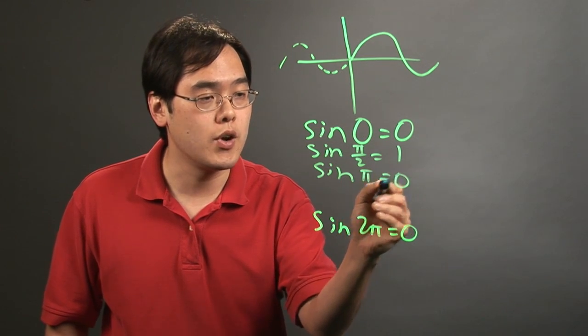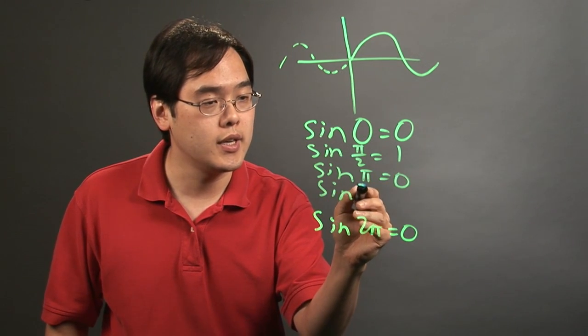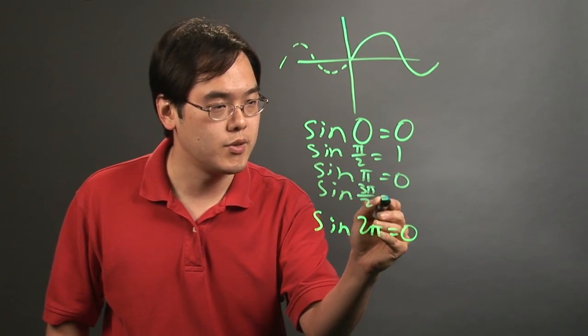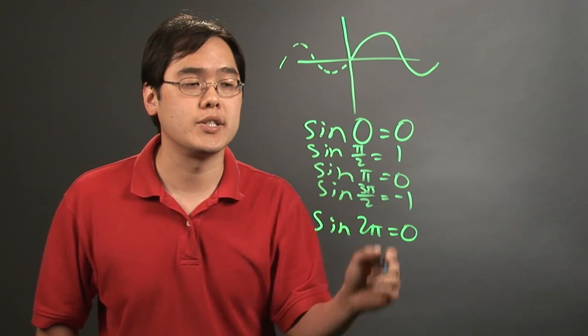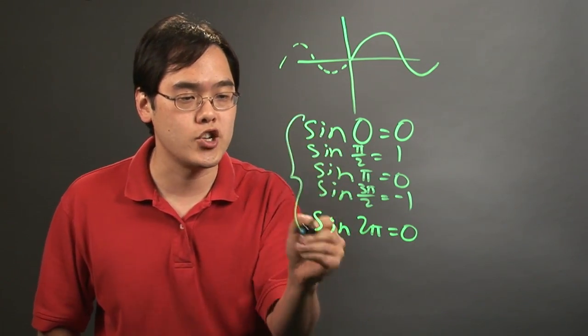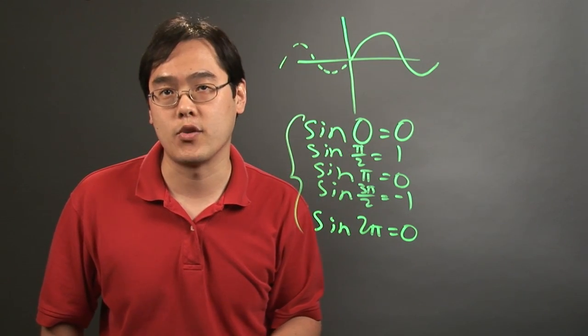Sine of π equals 0, and sine of 3π/2 gives you negative 1. These are some of the most common angles that will help you memorize the sine function, so this is a good foundation after you memorize the graph.